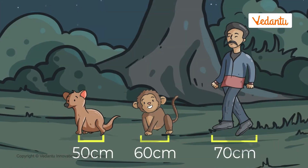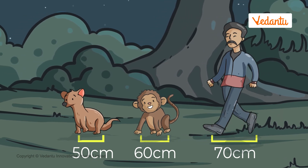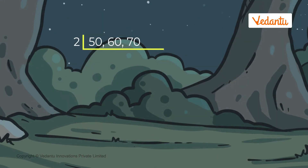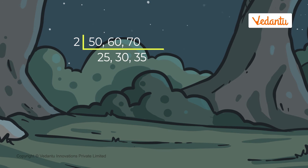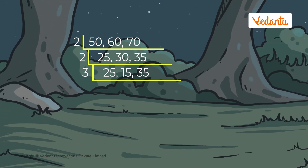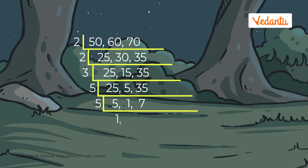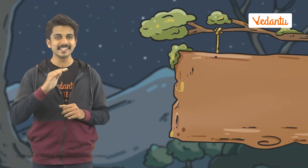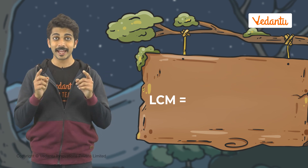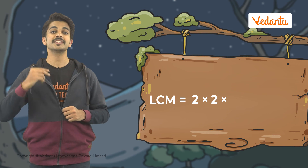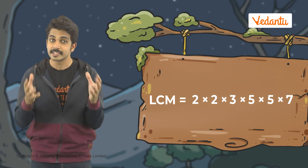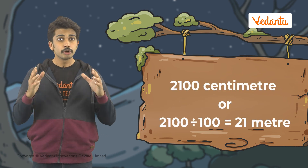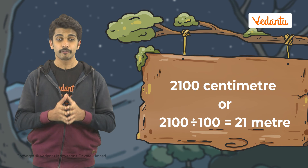Another method is to prime factorize all the numbers at the same time. Dividing the given numbers by the smallest prime number 2, we get 25, 30, and 35 as quotients. Again, divide the quotients by 2. Here, 25 and 35 will be carried forward as they are because they are no longer divisible by 2. We continue this until we get all the quotients as 1. Finally, the LCM will be the product of all the primes: 2 × 2 × 3 × 5 × 5 × 7. So we will have to walk 2100 centimeters for our steps to line up.